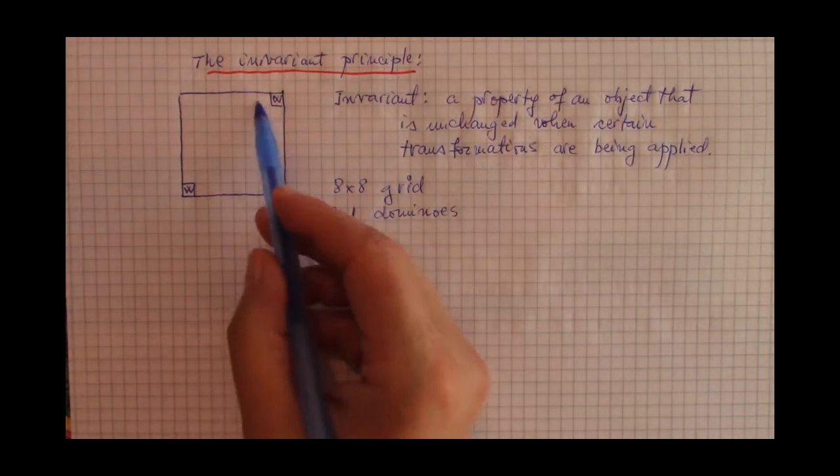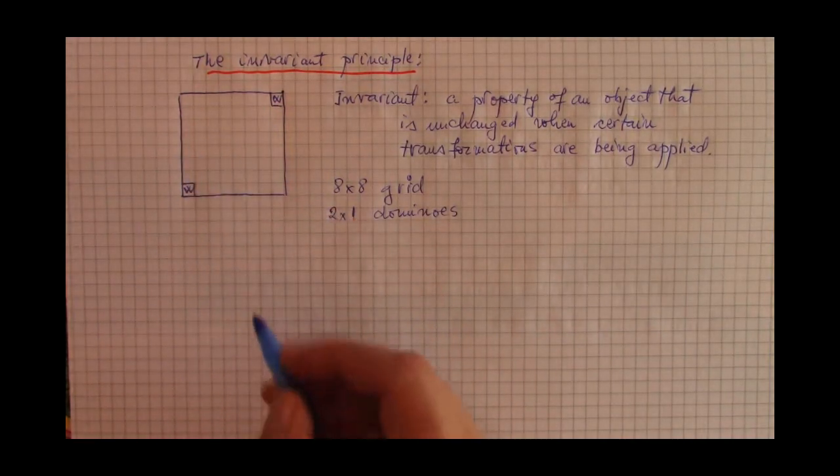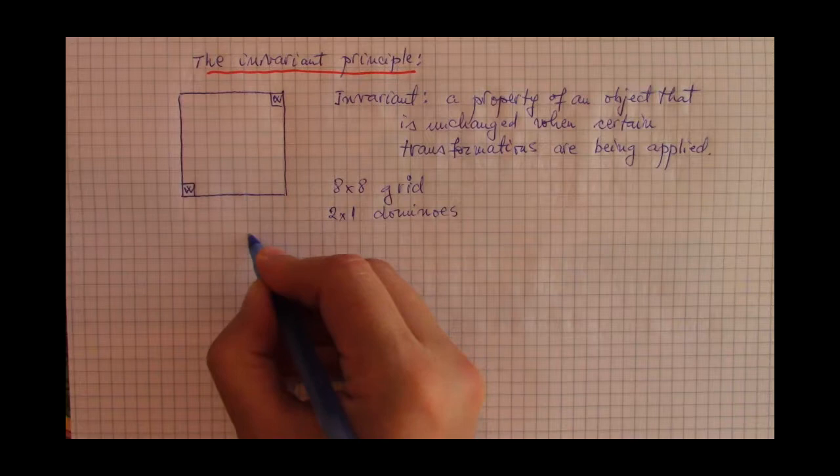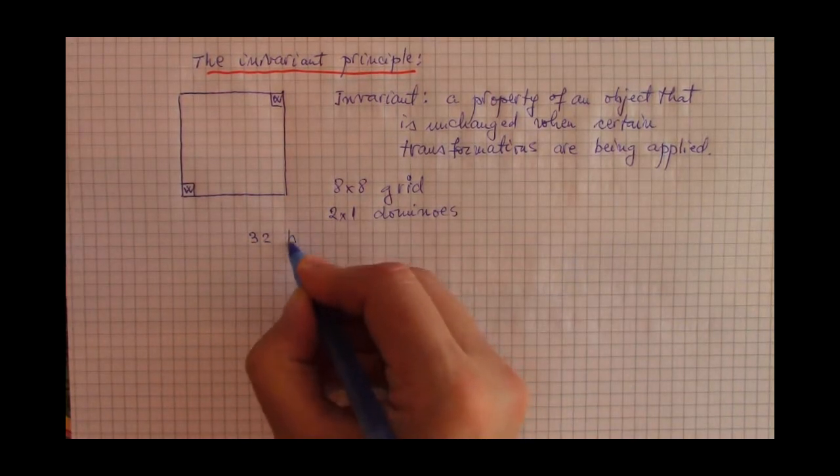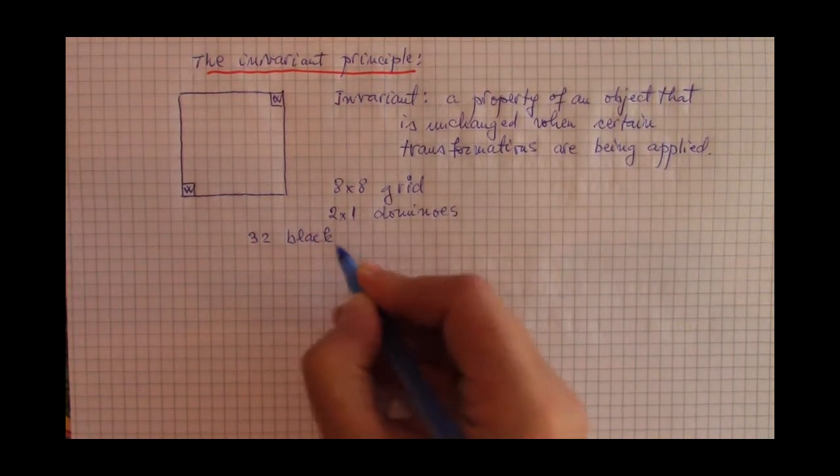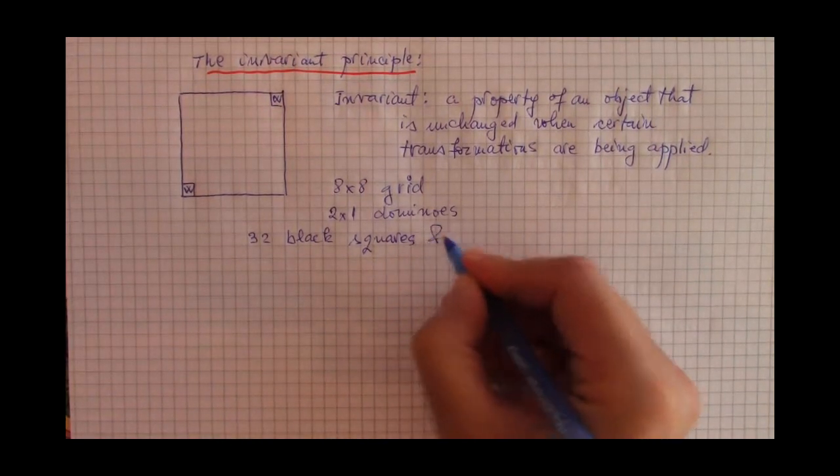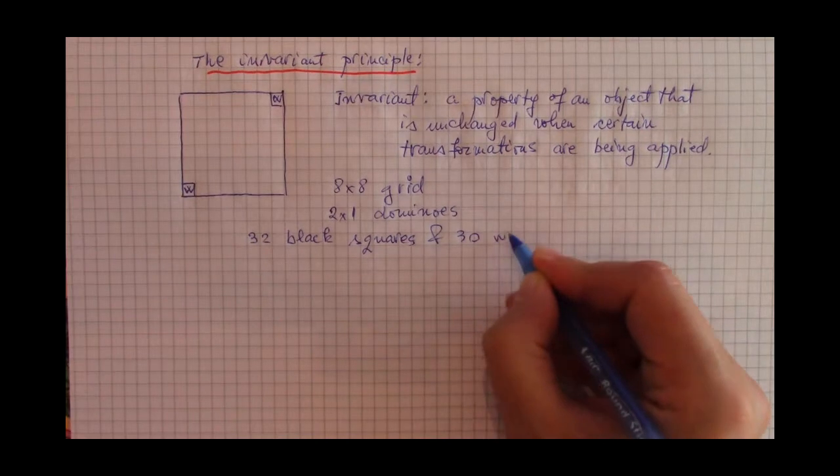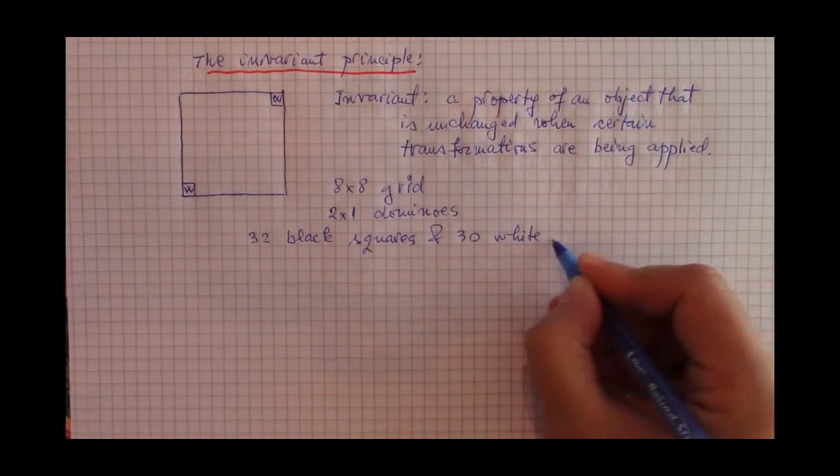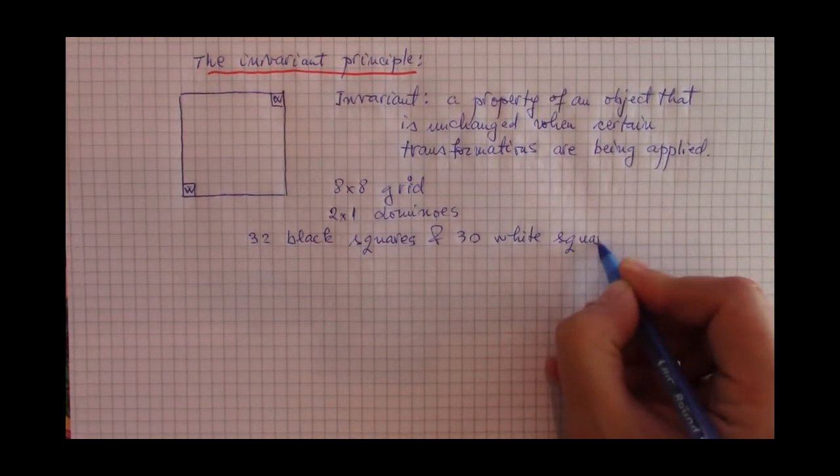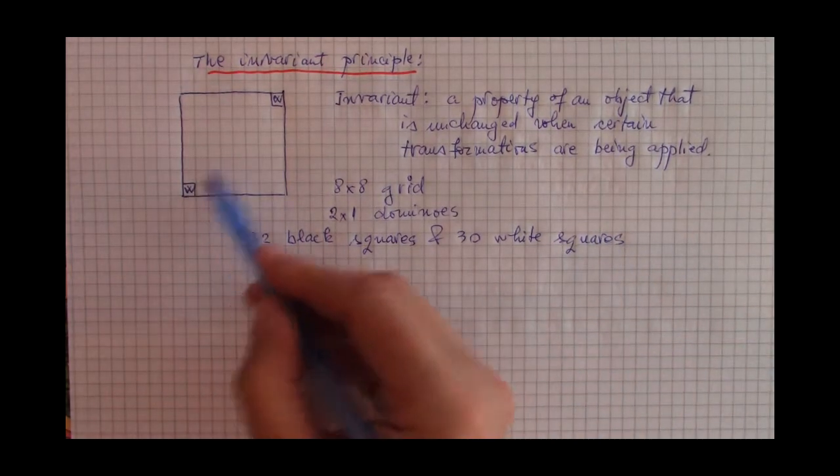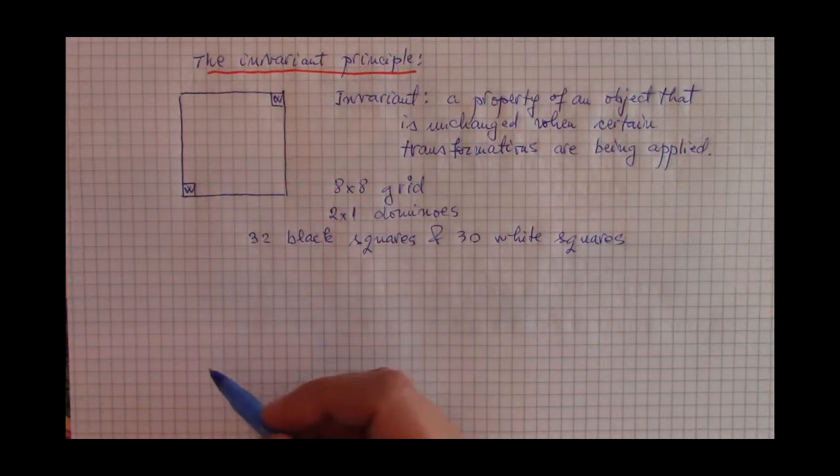So this remaining shape will have 32 black squares and 30 white squares, because we just eliminated these two white squares.